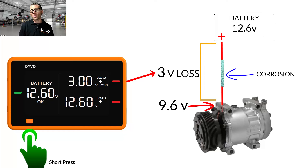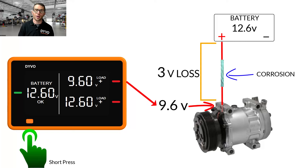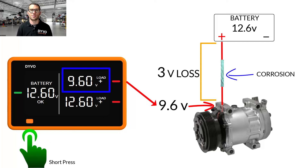Sometimes you may want to see the voltage dropped in a circuit, and sometimes you want to see the voltage available at a component. Keep in mind that this only affects the positive channel.